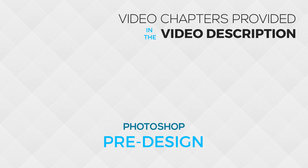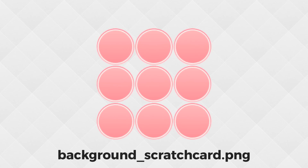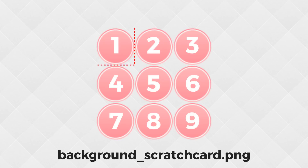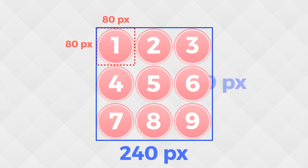The scratch card background looks like this. There are nine circles — 1, 2, 3, 4, 5, 6, 7, 8, 9. Each circle is placed inside of an 80 by 80 square. That means that this image is exactly 240 pixels wide by 240 pixels tall.